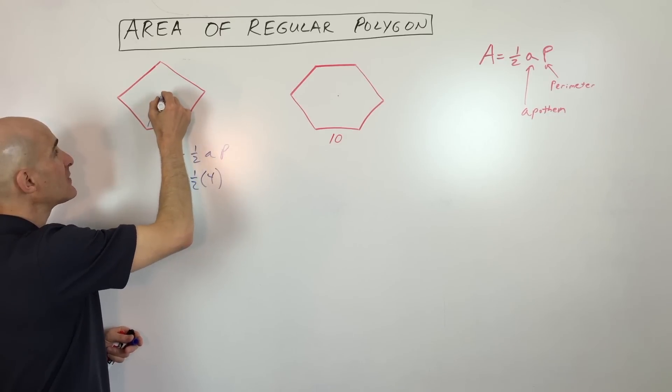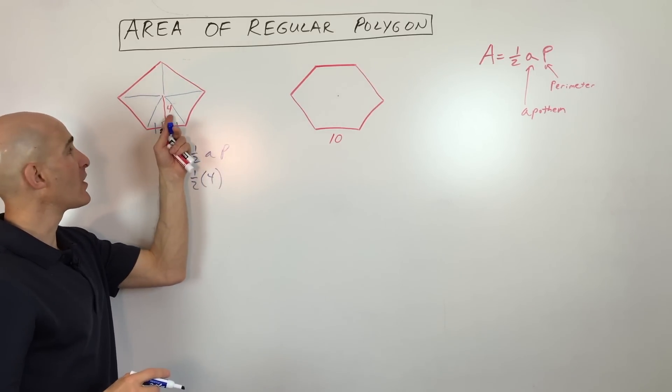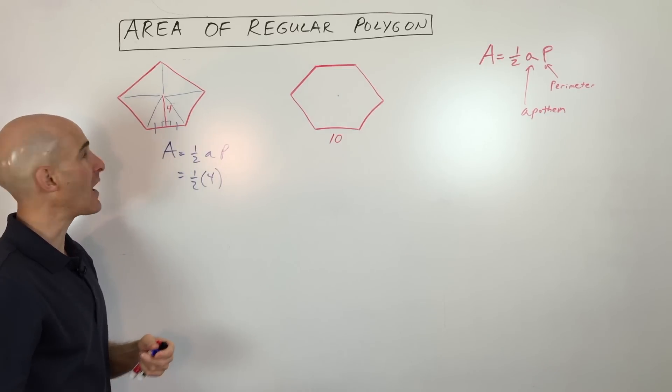And if you look at this, you can divide these regular polygons up into triangles. And what some students will do is they'll just find the area of one of these triangles, and then multiply by how many that you have. That's another way to solve the problem.